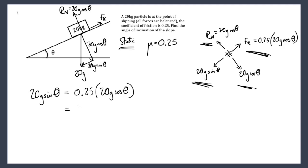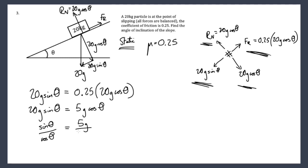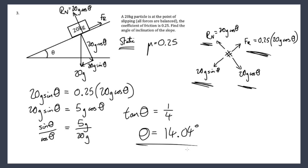So 20g sinθ = 0.25 × 20g cosθ. A quarter of 20 is 5, so this becomes 5g cosθ. Dividing both sides by cosθ: sinθ/cosθ = 5g/20g, the g's cancel, giving tan θ = 1/4. Therefore θ = 14.04°. By equating force up and force down the slope I can form an equation and solve it.